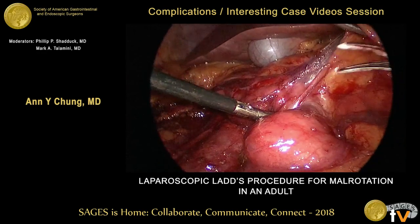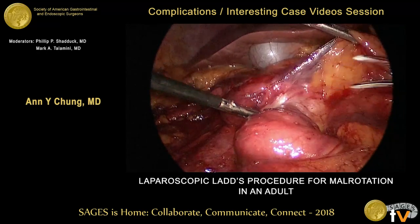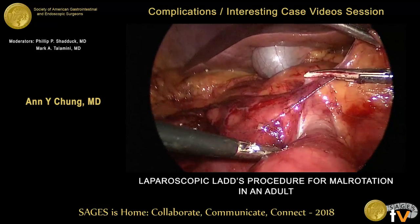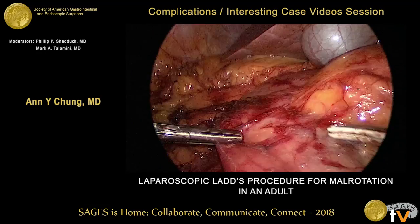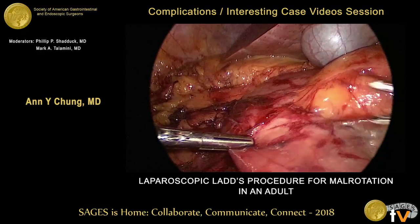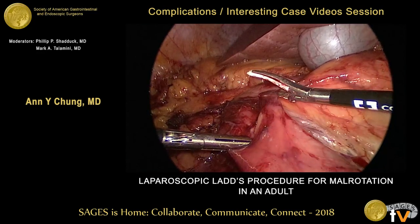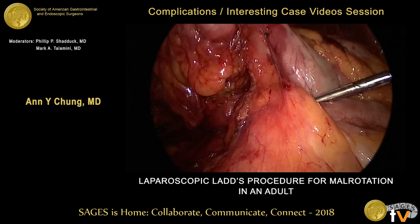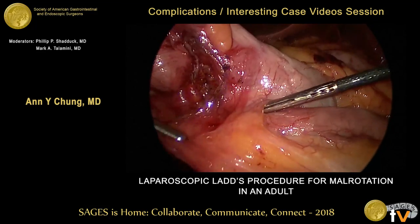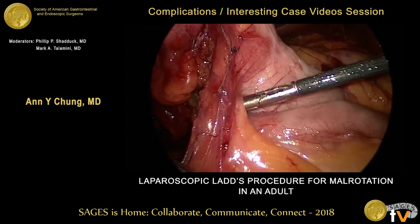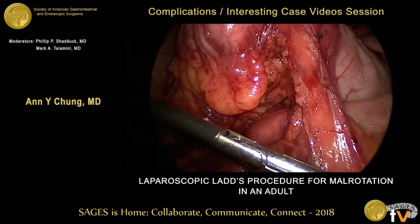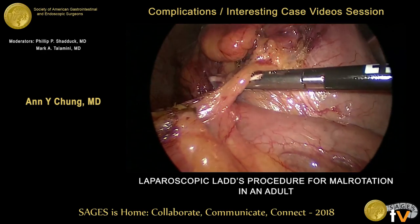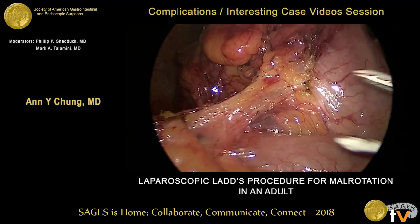This is coming up towards the head of the pancreas. It was during this adhesiolysis that we identified a fatty band adhered to the terminal ileum overlying the duodenum causing some obstruction, and we went ahead and divided this.